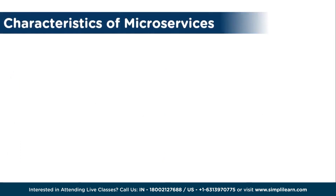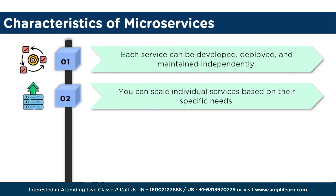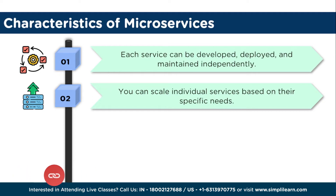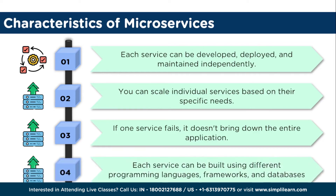Now let's talk about key characteristics of microservices. First, microservices are highly decoupled — each service can be developed, deployed, and maintained independently, providing flexibility and agility. Second, microservices are scalable — you can scale individual services based on their specific needs, allowing you to optimize resource allocation and handle increased user demand more effectively. Third, microservices are fault tolerant — if one service fails, it doesn't bring down the entire application; the fault is isolated and other services continue to function.